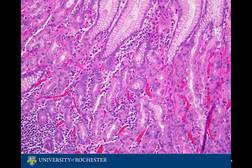Enteroendocrine cells are located throughout the fundic glands, but are mainly focused in the base. With regular staining, they cannot be readily identified. Enteroendocrine cells produce many substances, such as gastrin, glucagon, serotonin, and substance P.